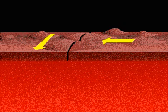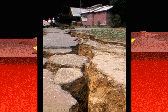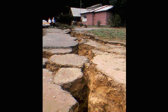The third type of plate interaction occurs where plates meet at oblique angles to each other. Pressure and friction between the surfaces prevent slippage. When the tension becomes too great, the plates shift, sliding along a fault line. Occasionally, violent tremors result and cause the widespread destruction of an earthquake.